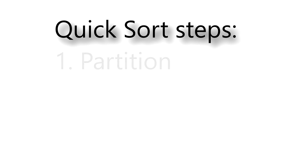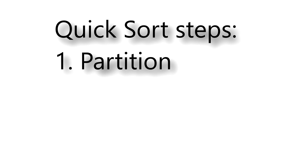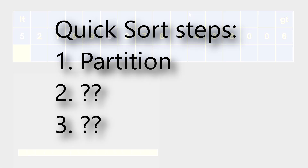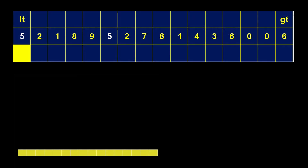Quicksort has three steps. The first step is to partition the array, which we're about to walk through. The other two steps — well, they're a bit wild. We'll get to them when we get to them. So let's talk about partitioning.